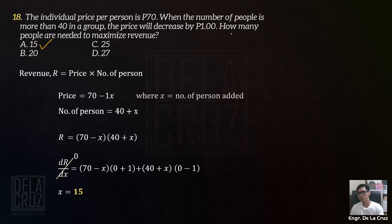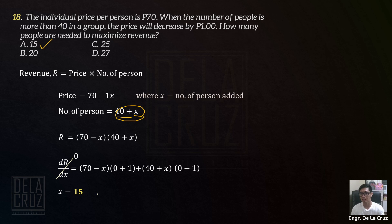Supposed to be the question must be the additional people needed to maximize the revenue. Kasi pag sinabi natin na how many people are needed, that must be 40 plus the additional one. Pero walang lumabas sa choices, kaya yung sagot dito is 15 — yung additional na. For me, the answer must be 40 plus 15, that's 55. Patagay na wala sa choices.